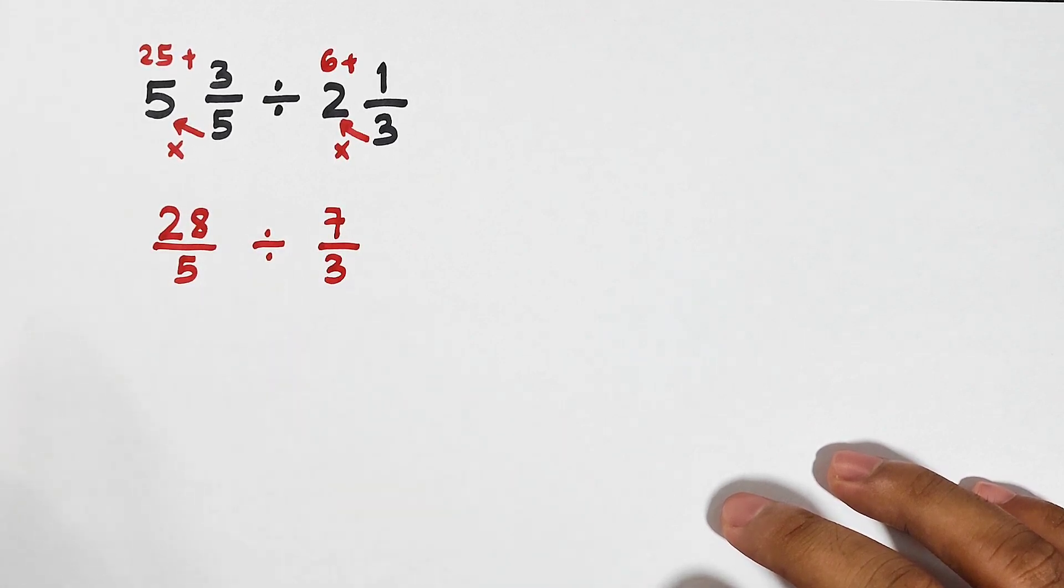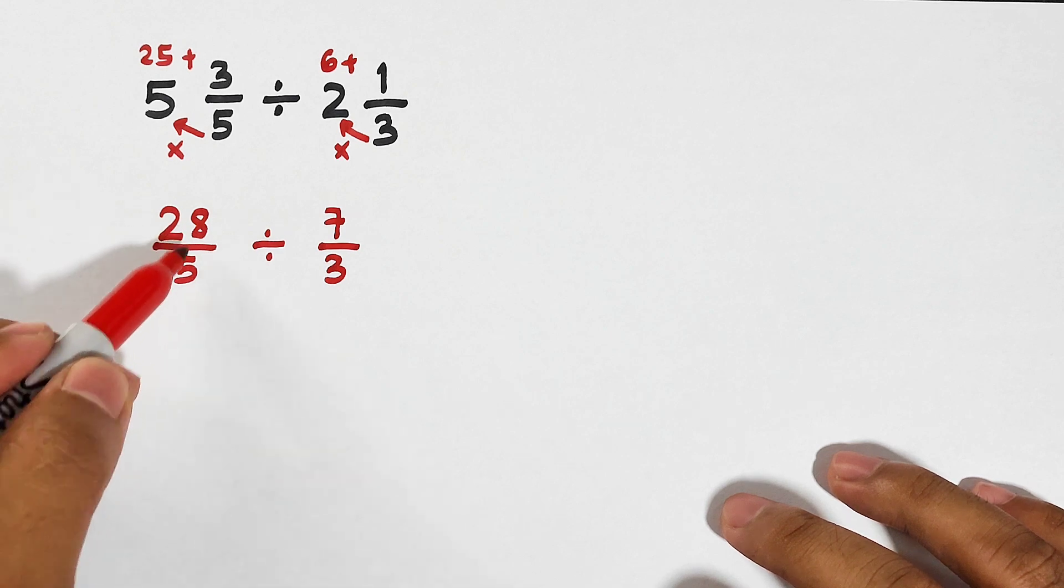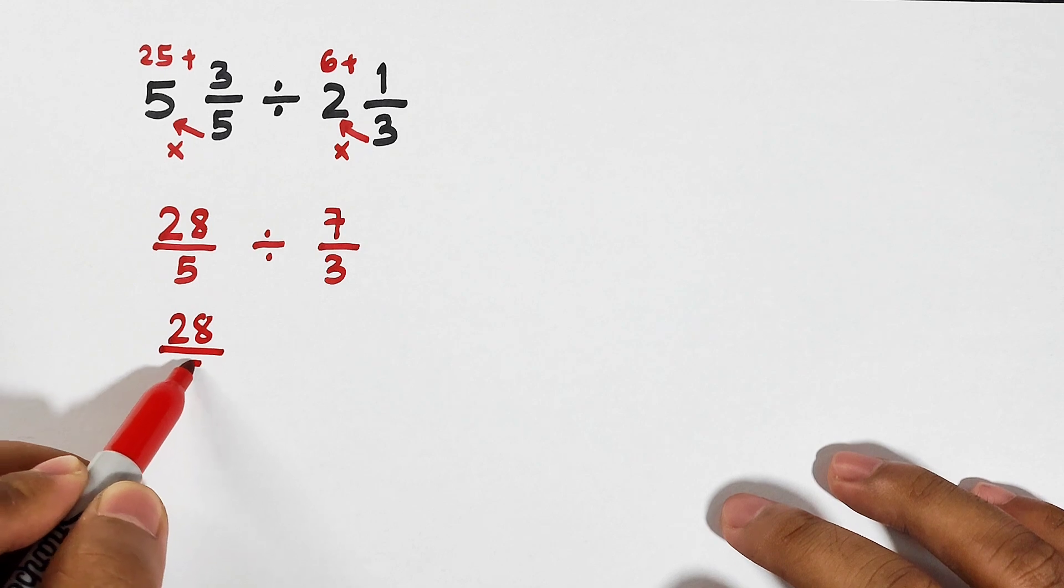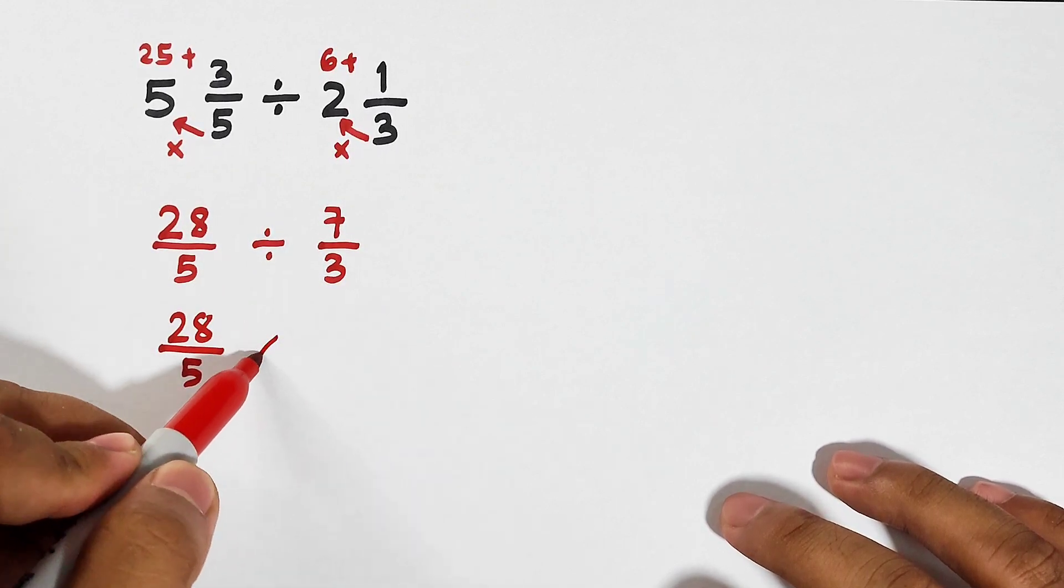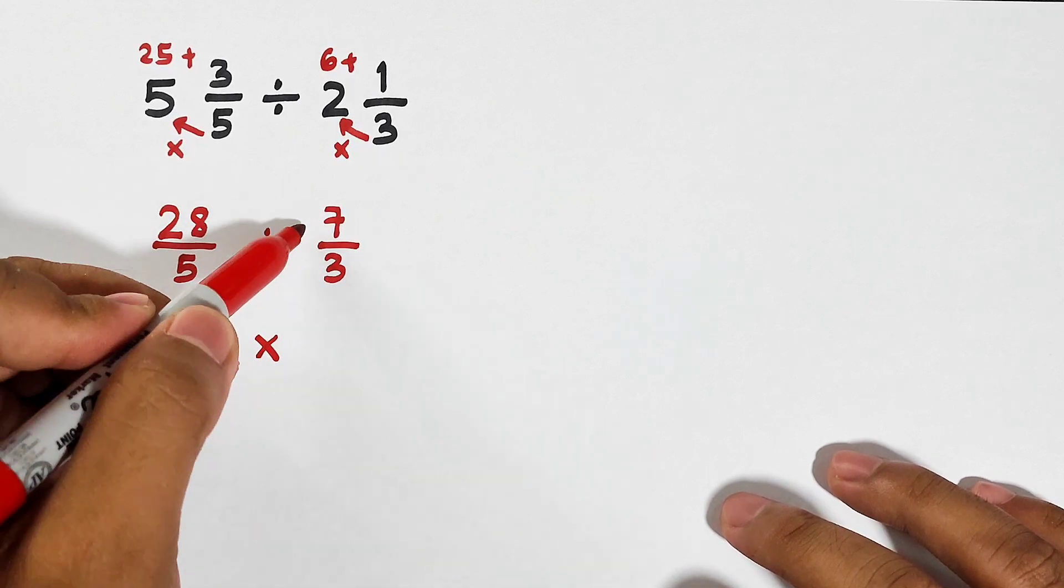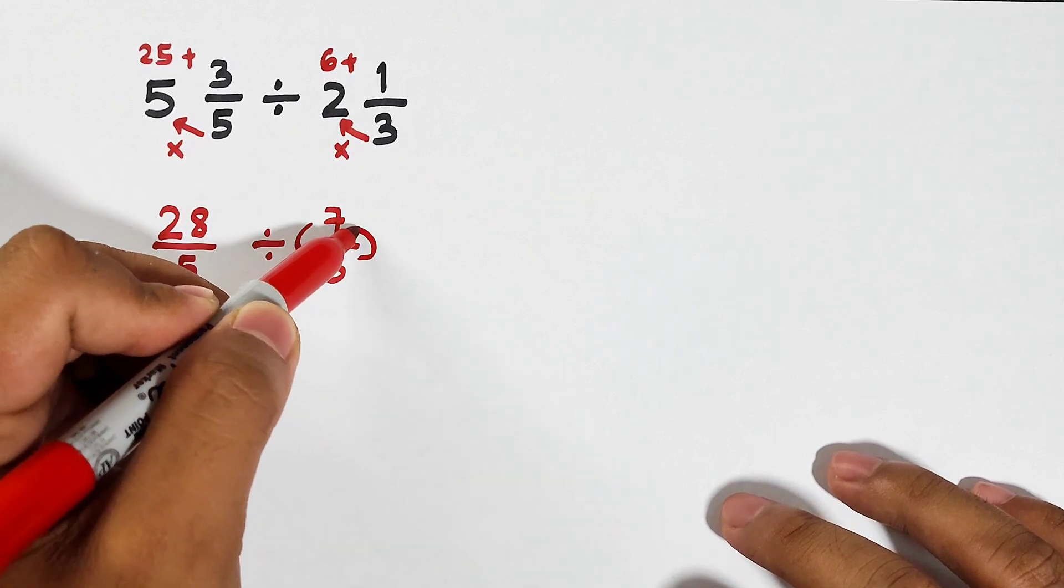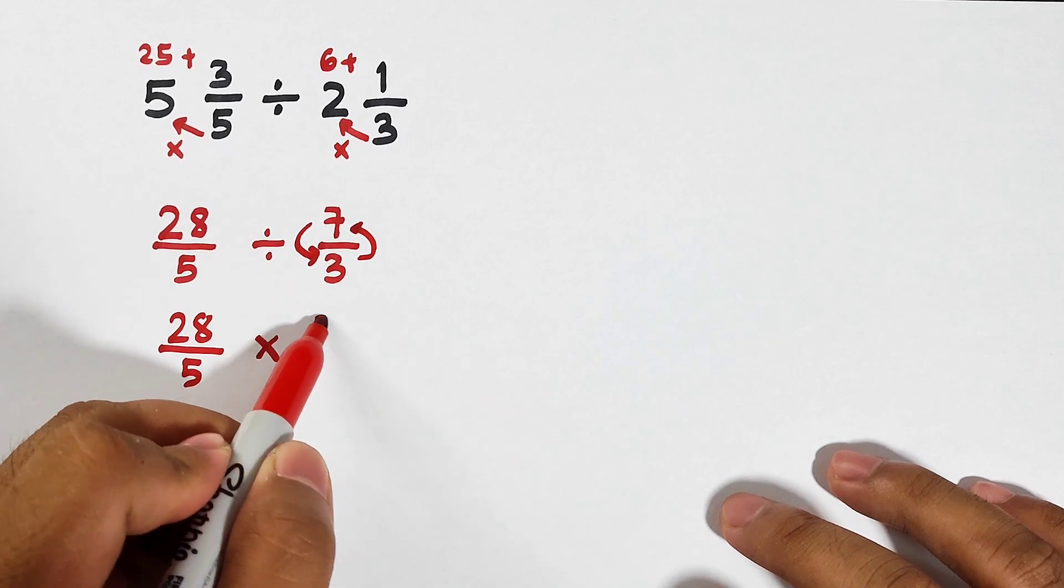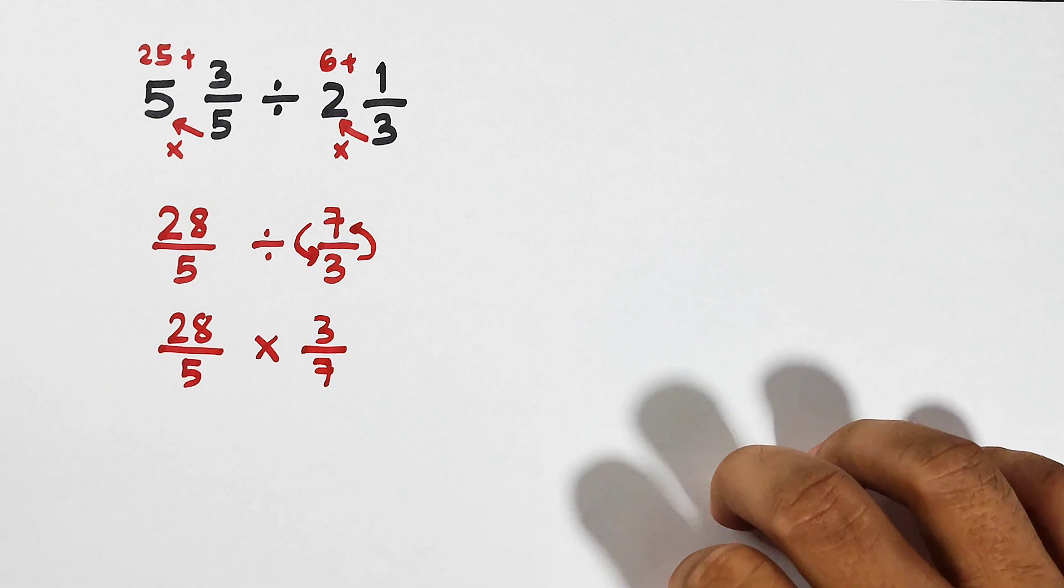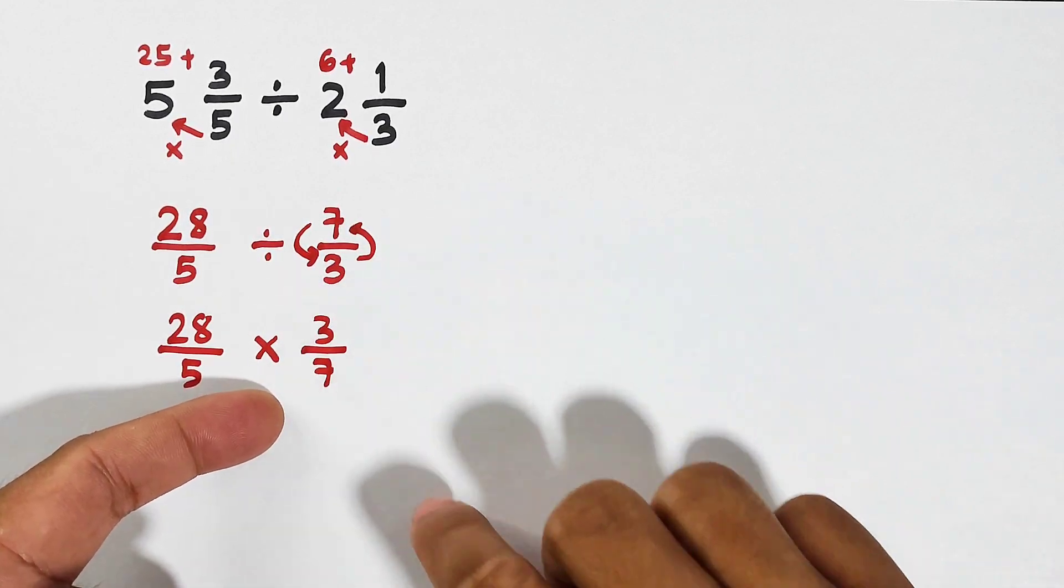Now what's next here is this: copy your first fraction, 28 over 5. Change this one into multiplication. Get the reciprocal of your second fraction, that is 3 over 7.